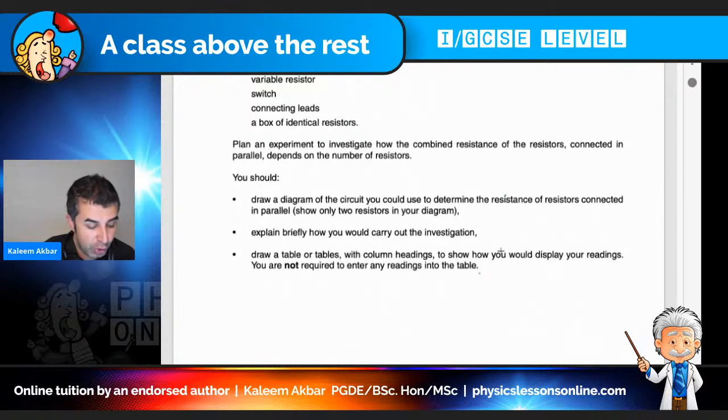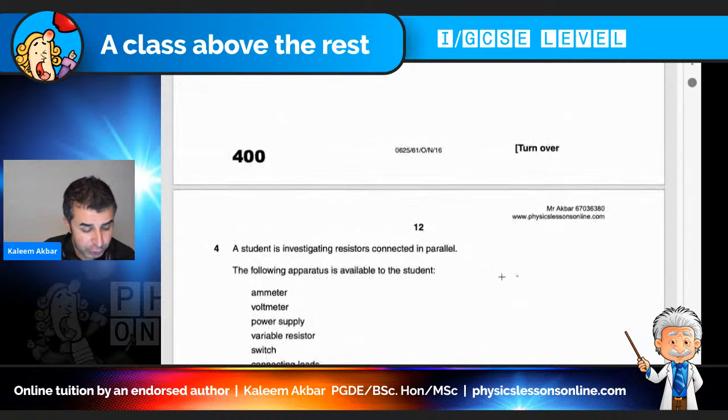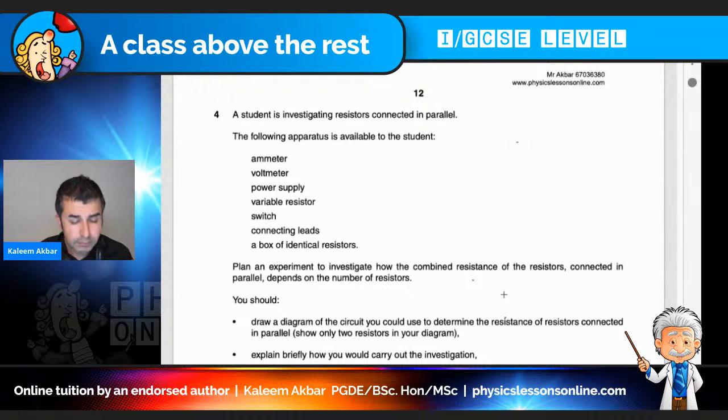It says, you should draw a diagram of the circuit you could use to determine the resistance of resistors connected in parallel. Show only two resistors in your diagram. Explain briefly how you would carry out this investigation and then draw a table or tables with column headings to show how you would display your readings.